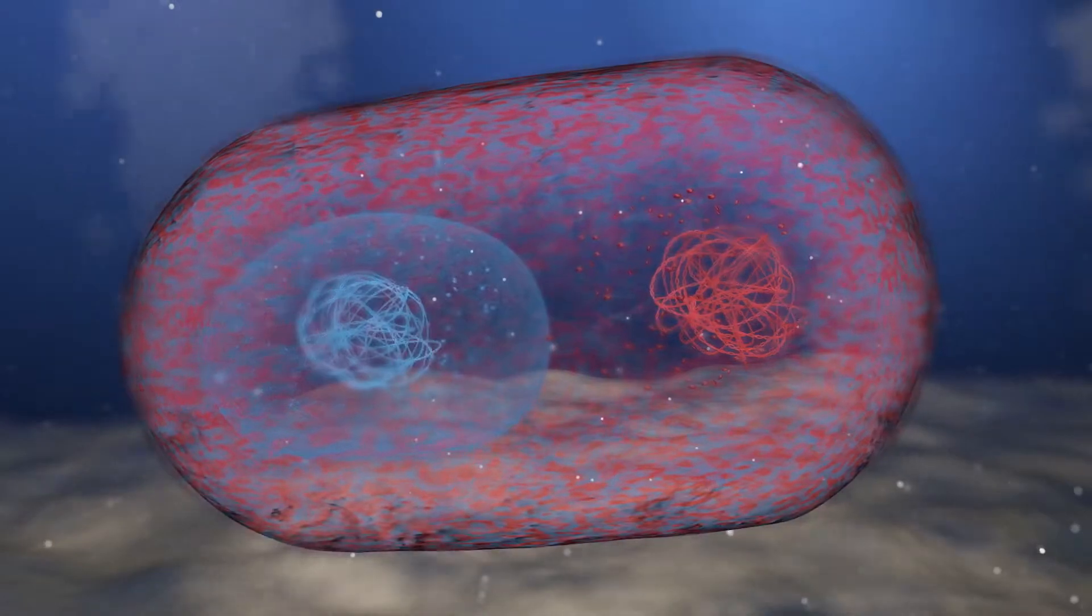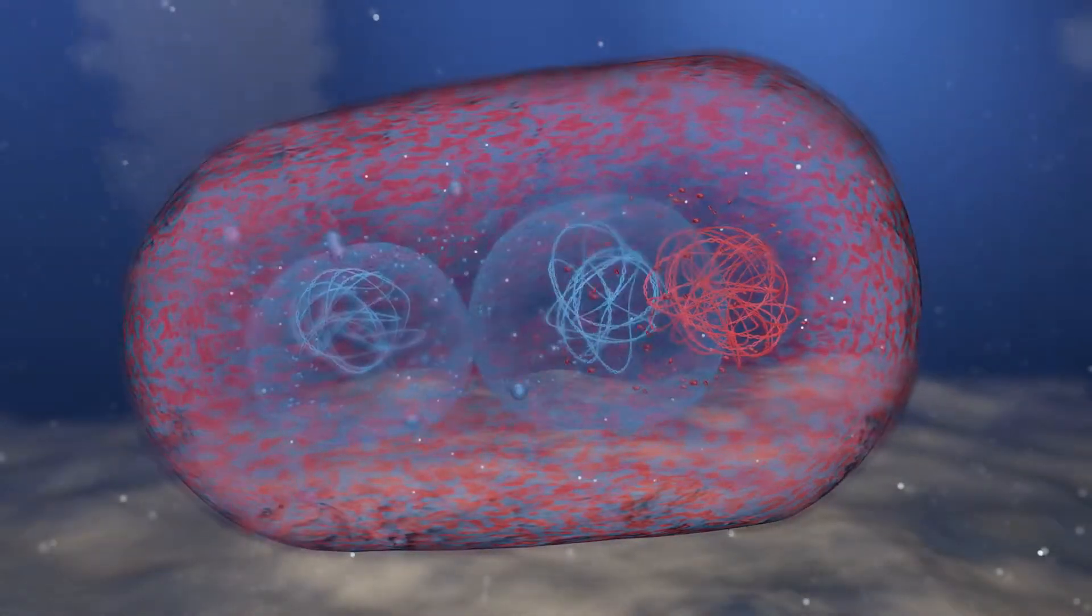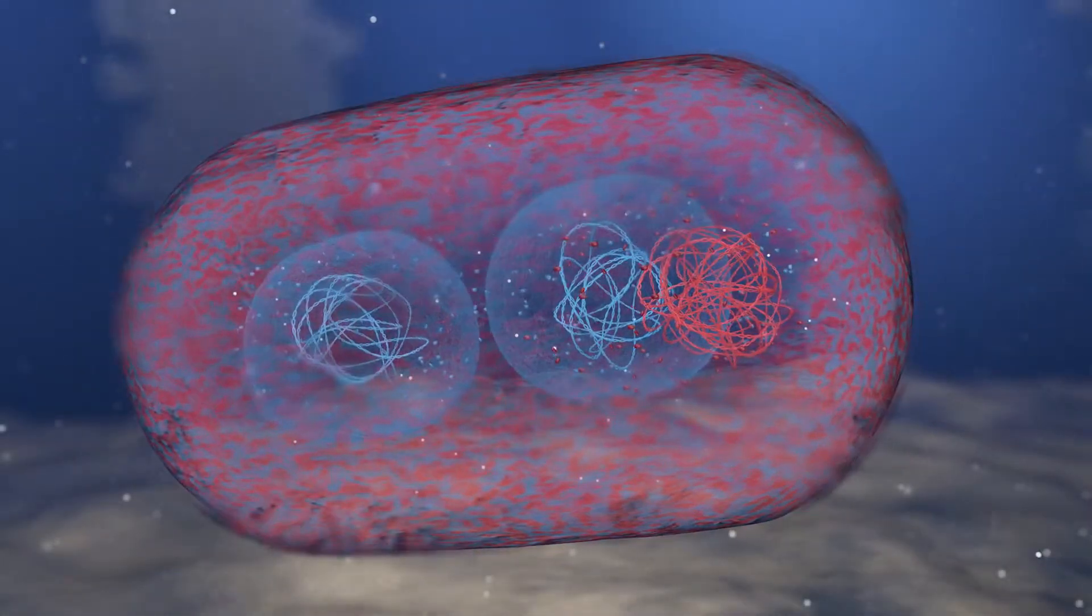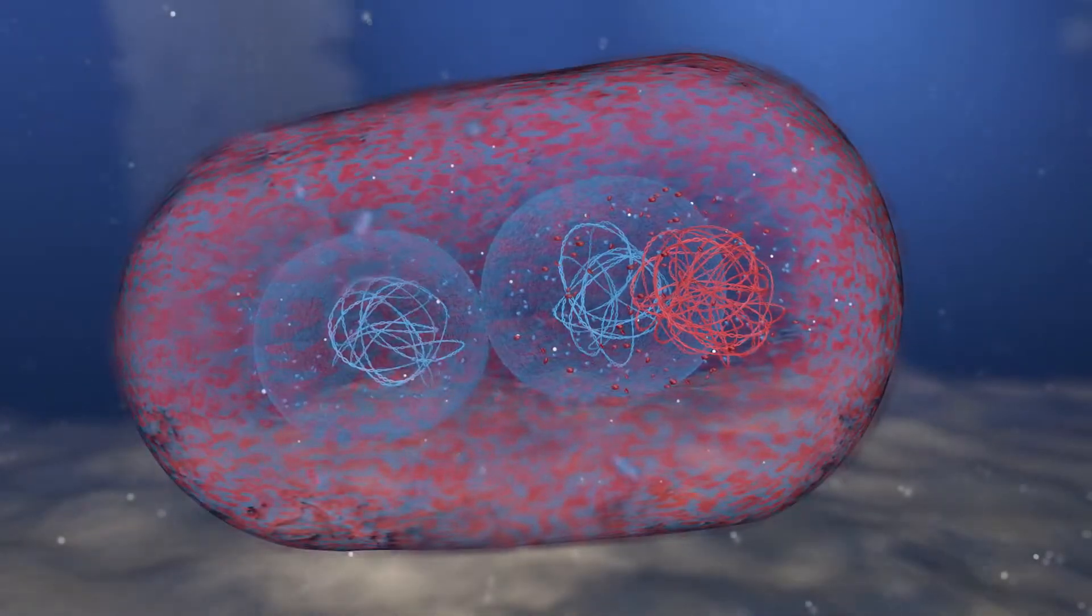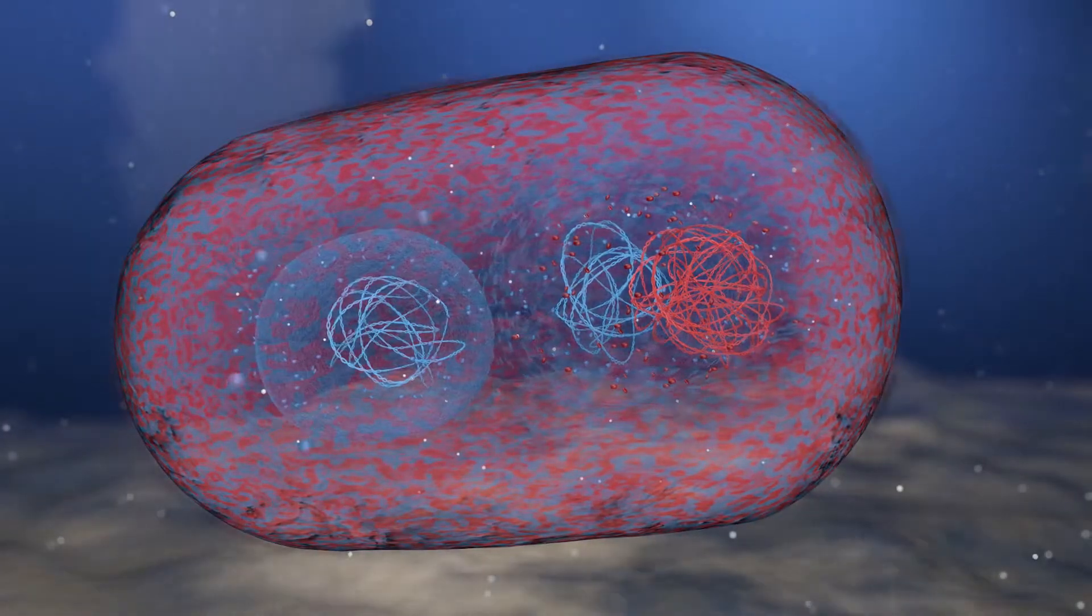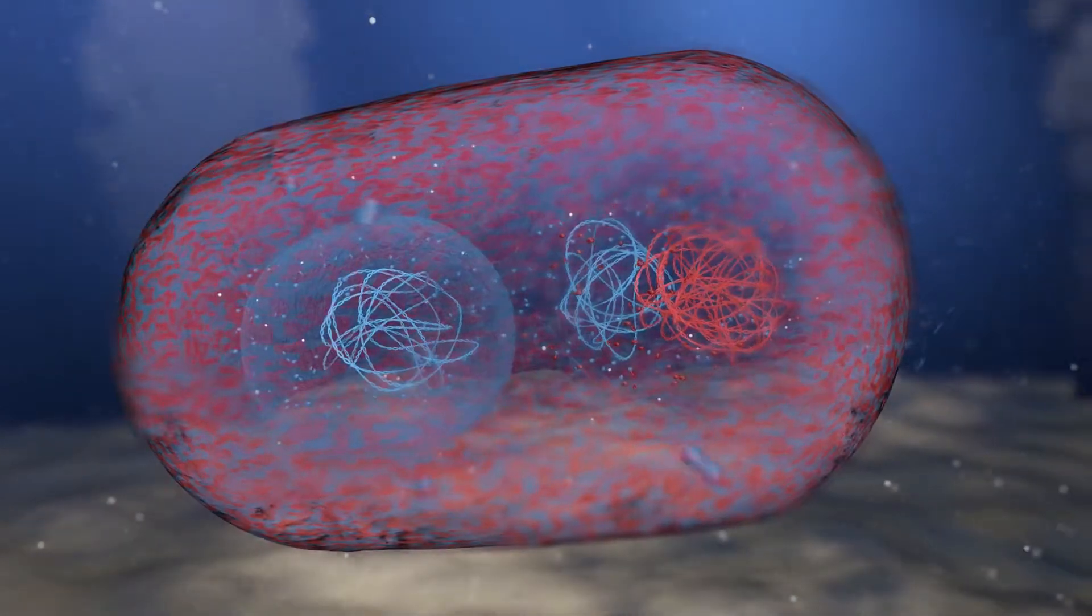The endosymbiont can divide. Occasional endosymbiont lysis results in bacterial chromosomes in the host cytosol, gene transfer from endosymbiont to host, and genome chimerism.